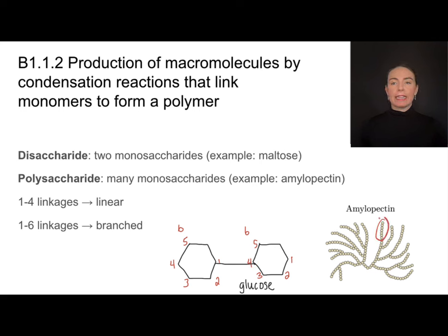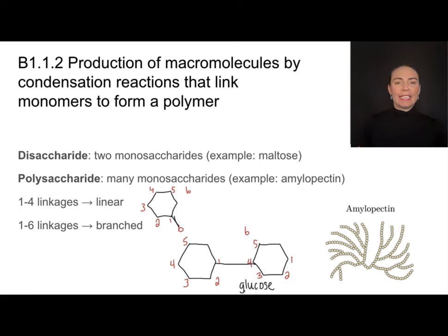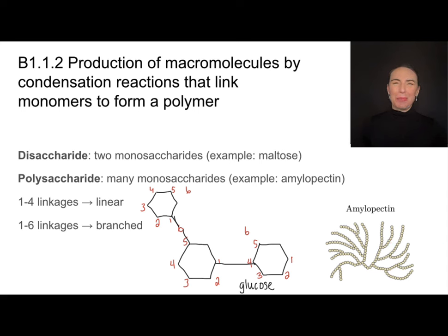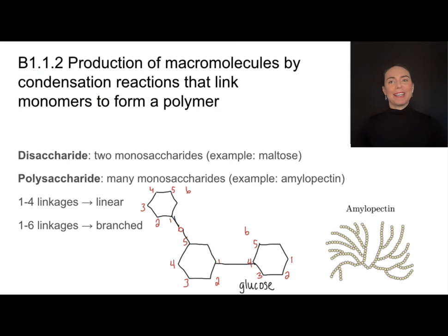A 1-4 linkage is going to result in these very linear portions of a molecule. If I have a bond between the first and the sixth carbon of adjacent glucose molecules — and don't forget, this is actually attached to this carbon over here — that's going to give me a 1-6 linkage between the first carbon of one and the sixth carbon of a different molecule. And that results in branching. So when we see branches in a molecule, especially something like amylopectin, we should be thinking about these 1-6 linkages. Regardless of which linkage you're forming, they're all formed by condensation reactions, just between different carbons.